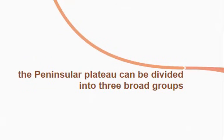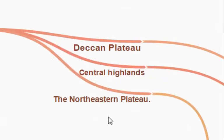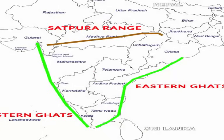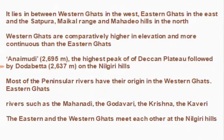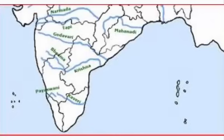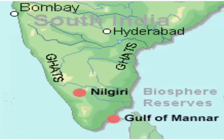The peninsular plateau can be divided into three broad groups: the Deccan Plateau, the central highlands, and the northeastern plateau. The Deccan Plateau lies between the Western Ghats in the west and Eastern Ghats in the east, with the Satpura, Maikal Range, and Mahadeo Hills in the north. Western Ghats are comparatively higher in elevation and more continuous than the Eastern Ghats. Anaimudi is the highest peak of the Deccan Plateau, followed by Doddabetta on the Nilgiri Hills. Most central rivers have their origin in the Western Ghats. Some Eastern Ghats rivers are Mahanadi, Godavari, Krishna, and Kaveri. The Eastern and Western Ghats meet at the Nilgiri Hills.